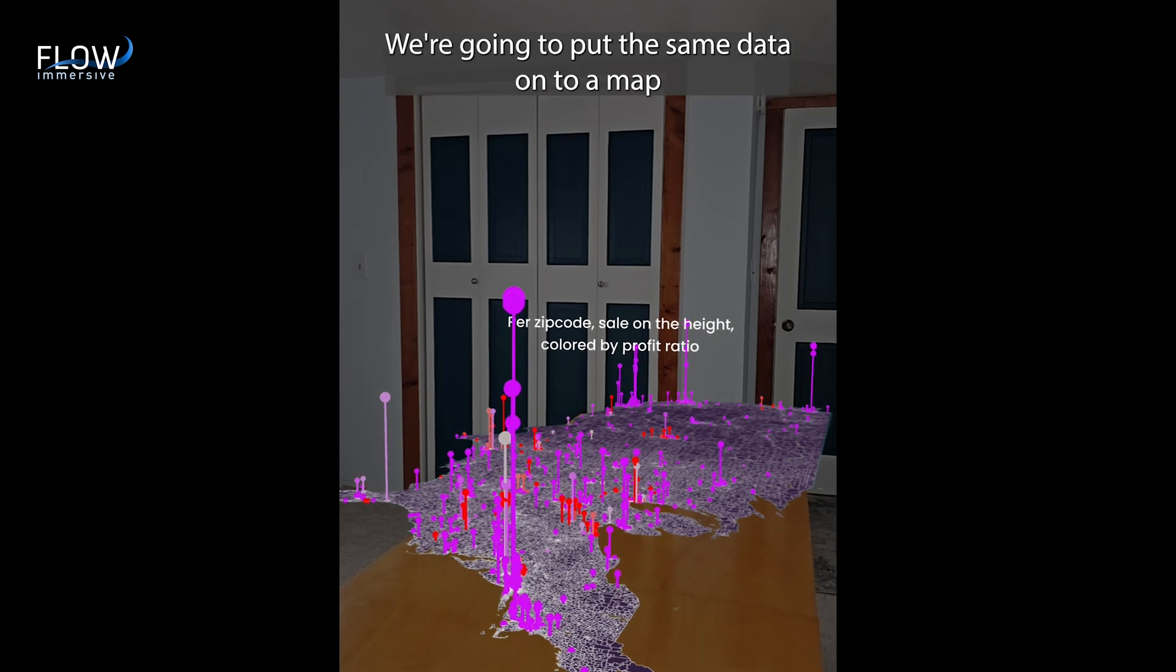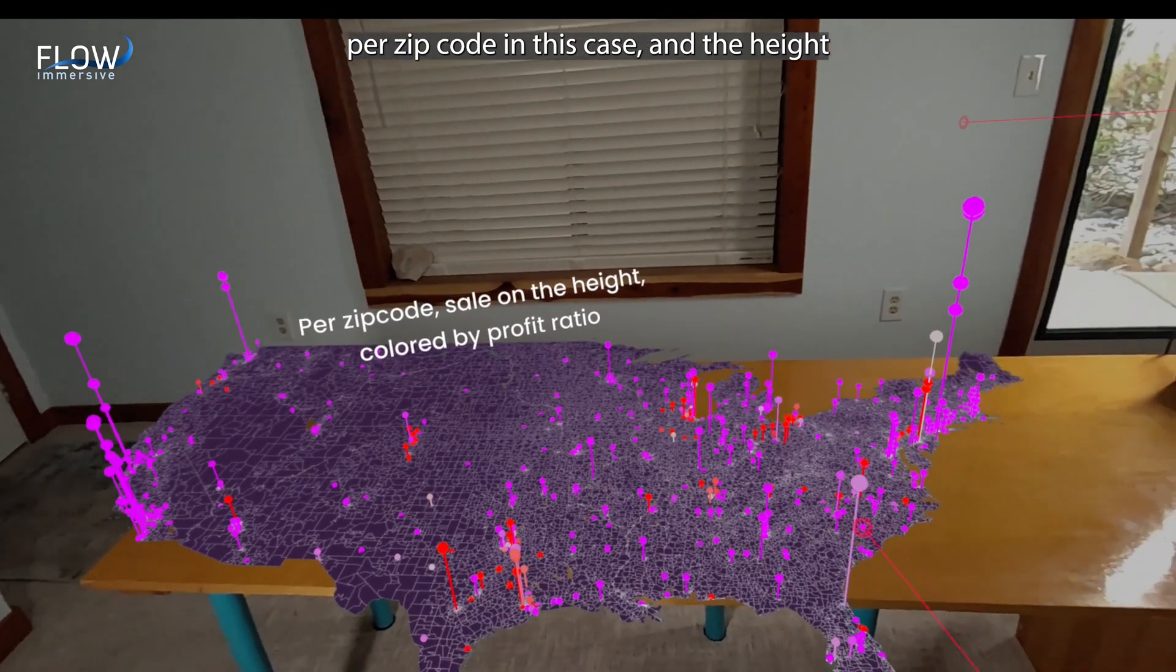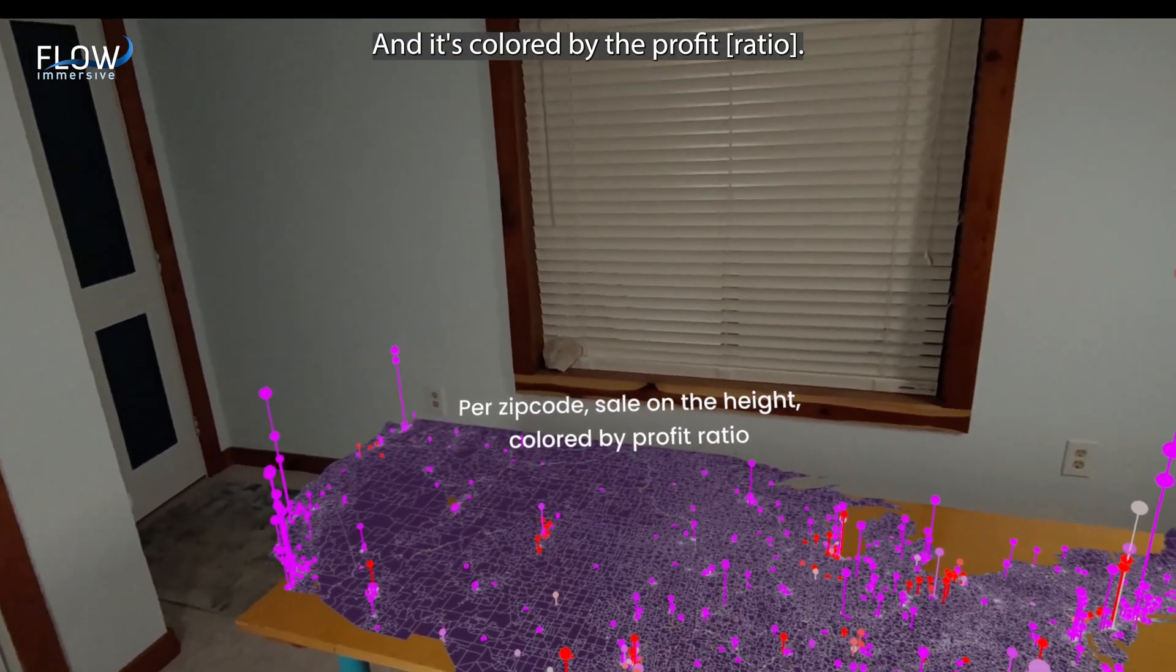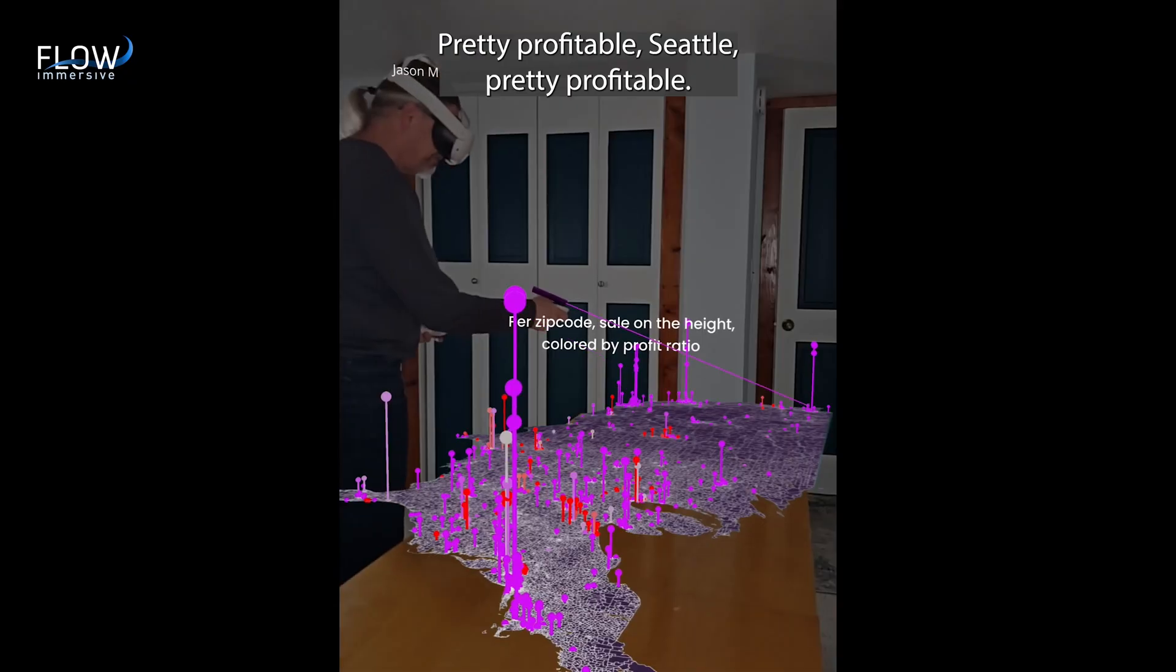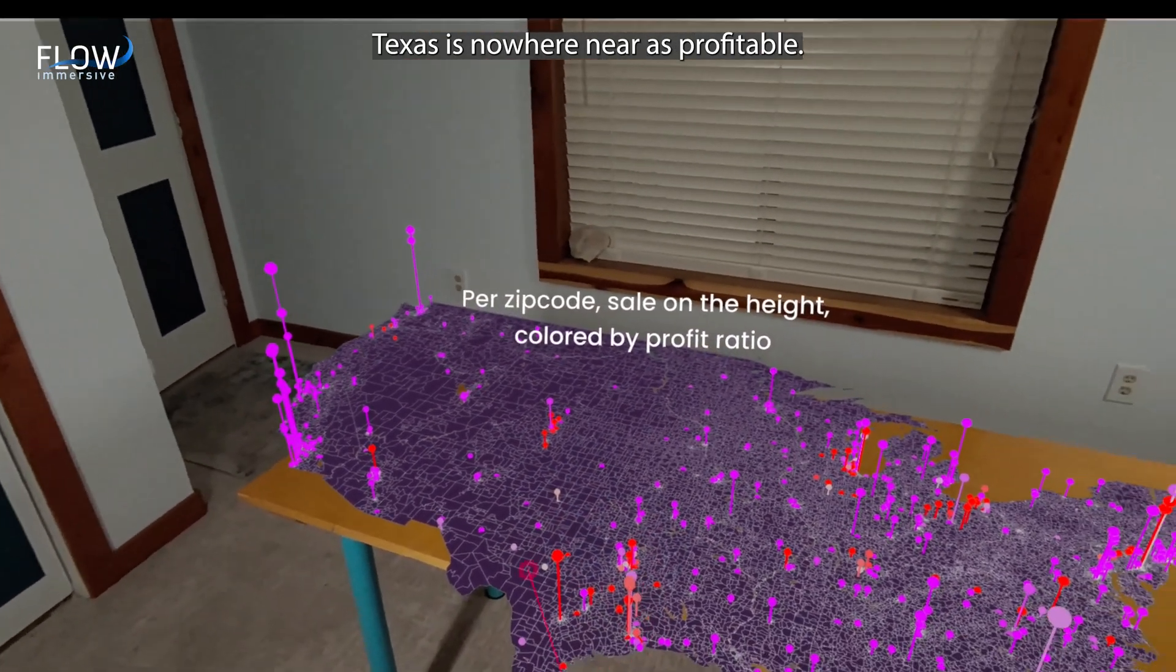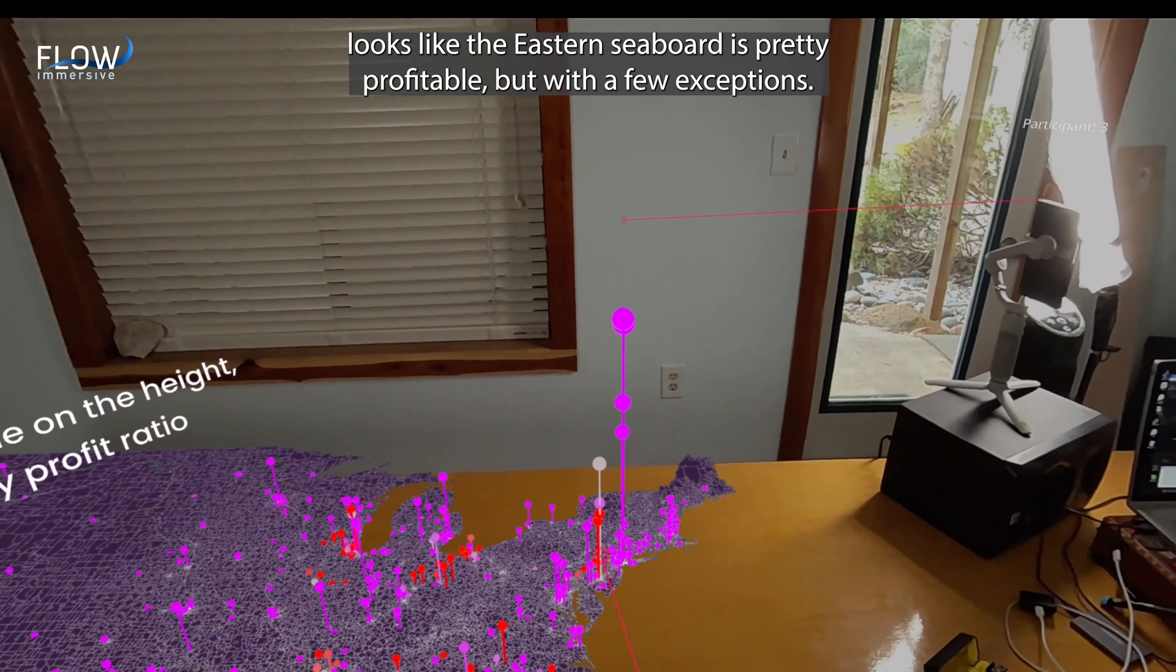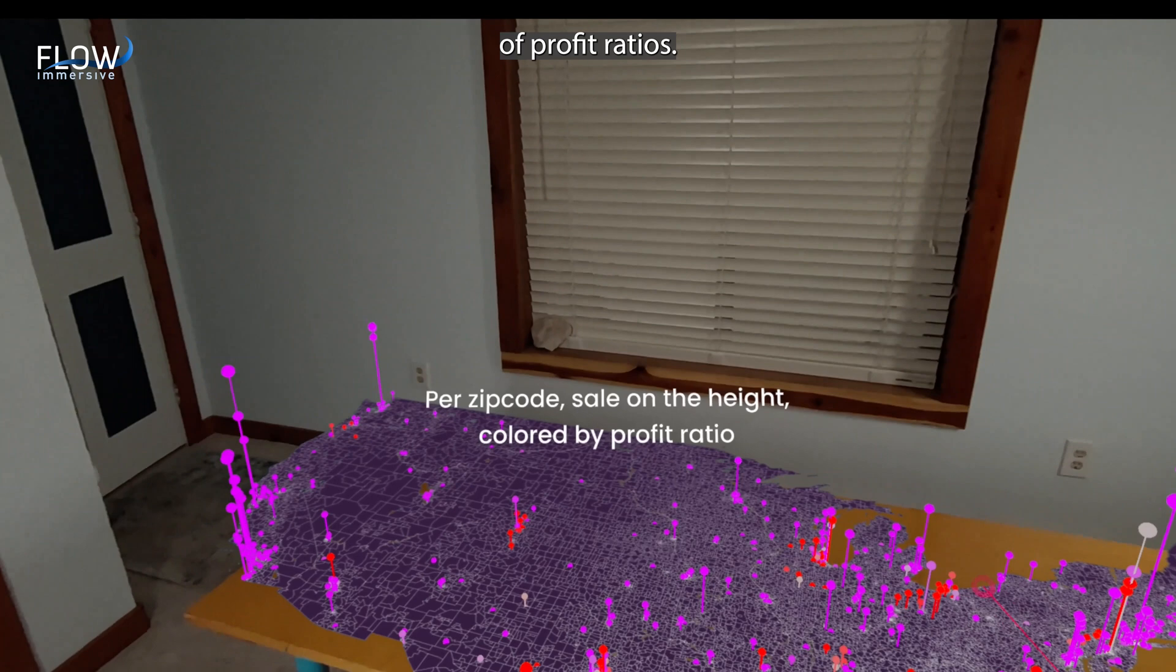Here's another way of looking at it. We're going to put the same data onto a map per zip code in this case. And the height is the size of the deal and it's colored by the profit. Take a look, California, pretty profitable, Seattle, pretty profitable. What's going on with Texas? How come Texas is nowhere near as profitable? What's going on here in the Midwest? In Chicago looks like the Eastern seaboard is pretty profitable, but with a few exceptions. So really interesting to see a geographic distribution of profit ratios.